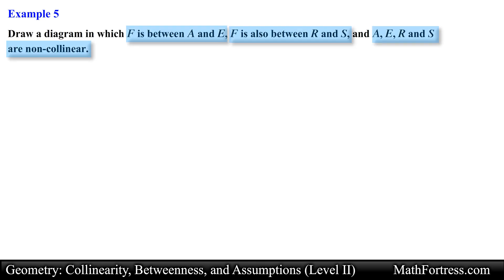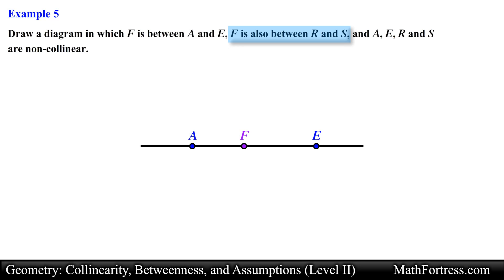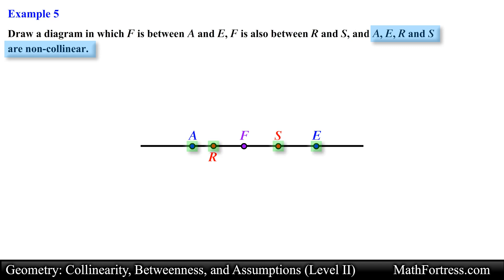Draw a diagram in which point F is between point A and point E. Point F is also between point R and point S. And points A, E, R, and S are non-collinear. In this problem we are provided with descriptions of how a set of points are arranged relative to one another. We draw the diagram by going through each statement. The first statement says point F is between point A and point E, so we draw that arrangement. The next statement says point F is also between point R and point S. The last statement says that points A, E, R, and S are non-collinear, meaning all four points do not lie on the same line.